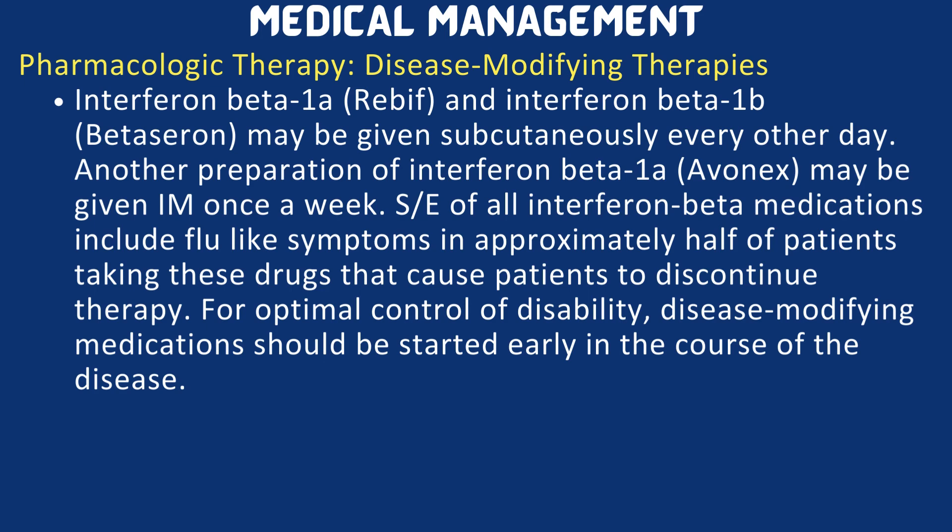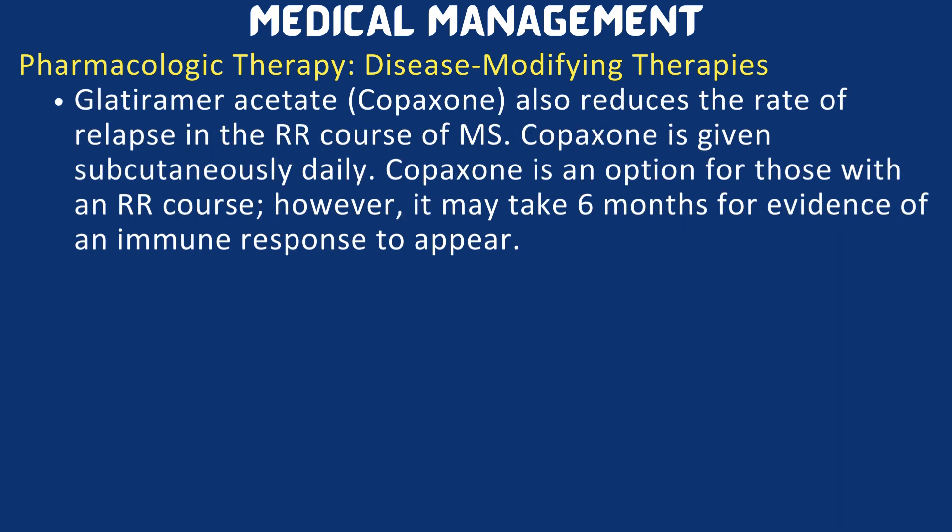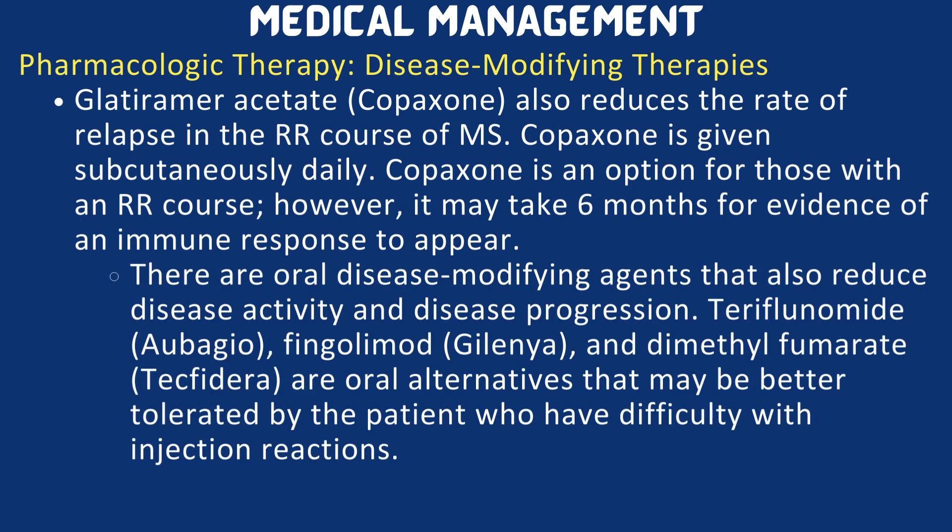Glatiramer acetate (Copaxone) also reduces the rate of relapse in the relapsing-remitting course of MS. Copaxone is given subcutaneously daily and is an option for those with a relapsing-remitting course; however, it may take 6 months for evidence of an immune response to appear. There are also oral disease modifying agents that reduce disease activity and progression: Teriflunomide (Aubagio), Fingolimod (Gilenya), and Dimethyl Fumarate (Tecfidera). These oral alternatives may be better tolerated by patients who have difficulty with injection reactions.